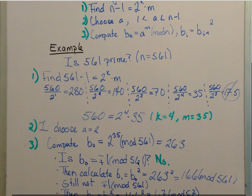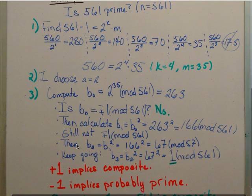So therefore, we go on to the next one. So b2 will be equal to b1 squared. So we take 166 squared, and we get that it equals 67 mod 561, which is not equal to plus or minus 1 again.